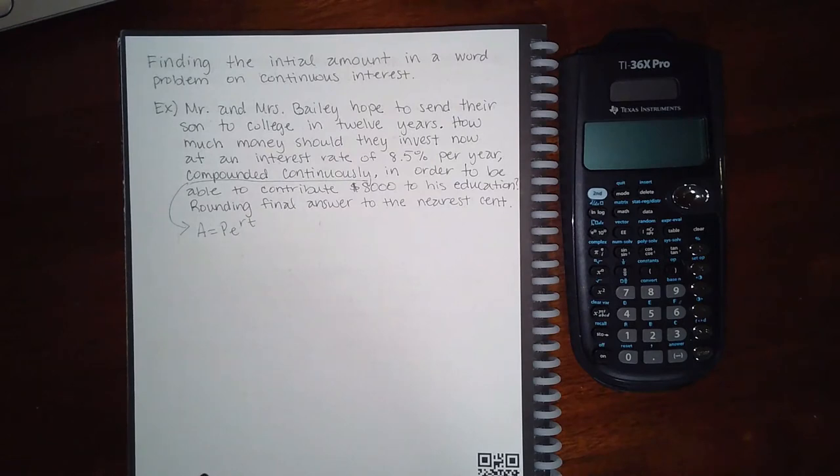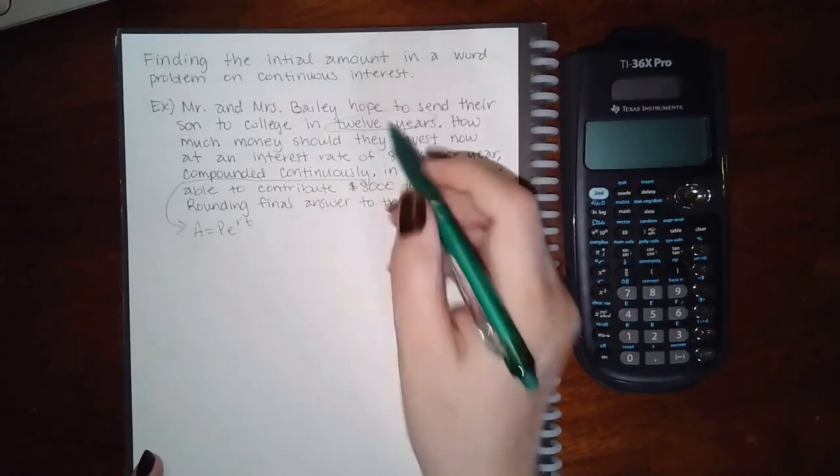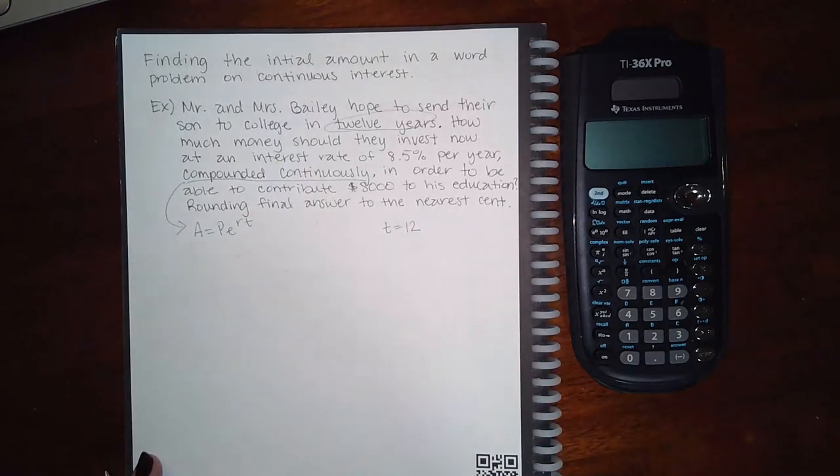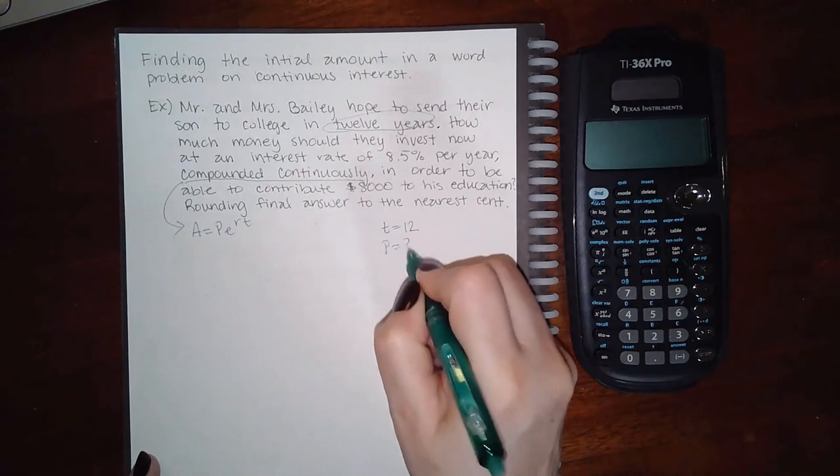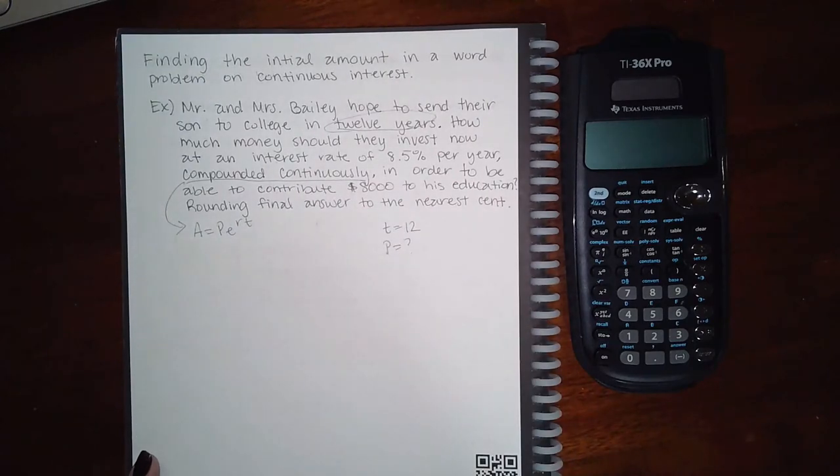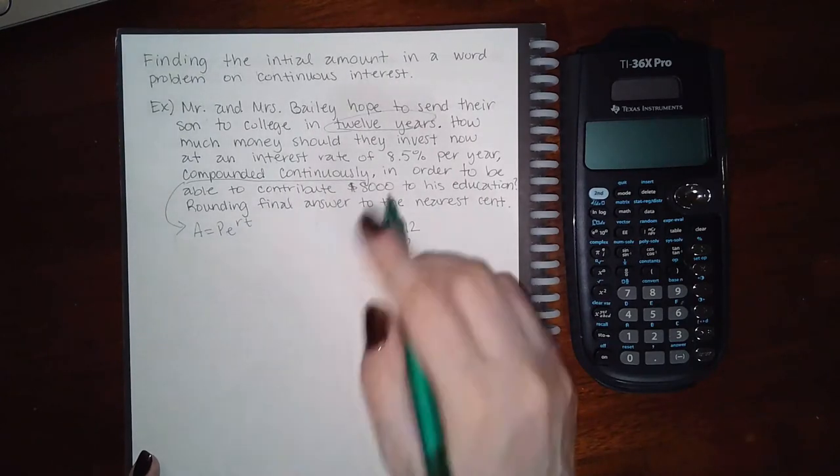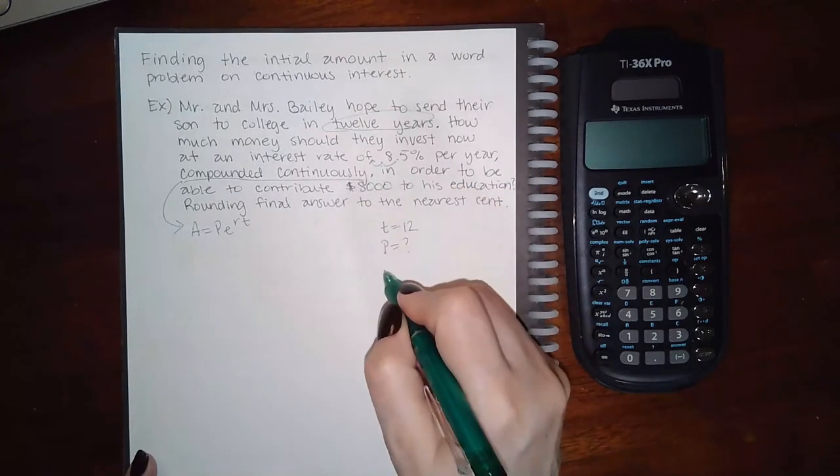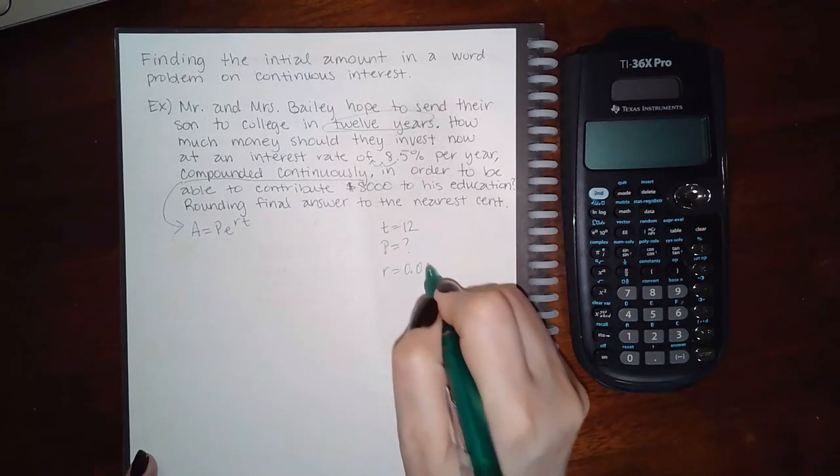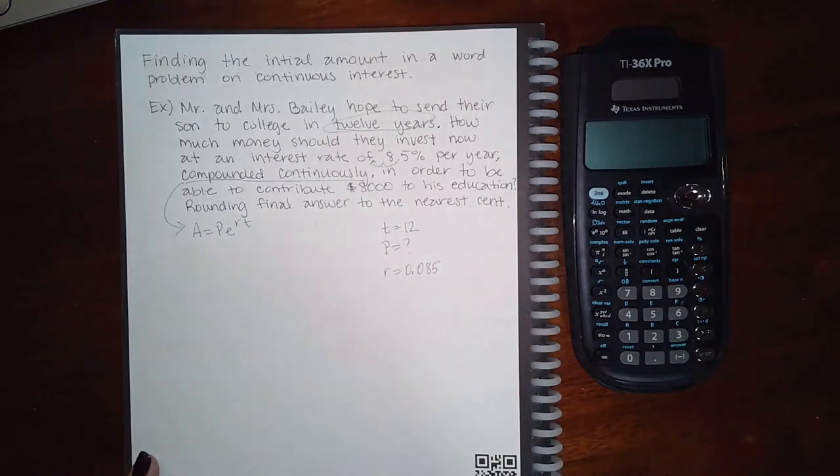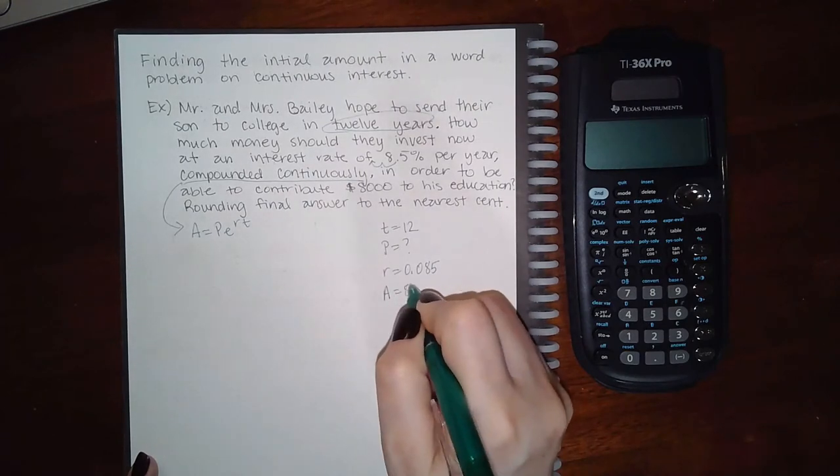Let's see what they want. Mr. and Mrs. Bailey hope to send their son to college in 12 years. So that means time is probably 12 years. How much money should they invest now? So I don't know what their investment is—that's what I'm trying to figure out—at an interest rate of 0.085 compounded continuously, in order to be able to contribute $8,000 to his education. So that's the final amount that they hope to get.